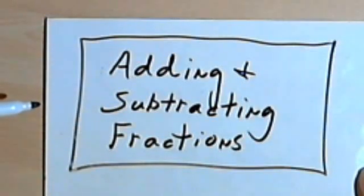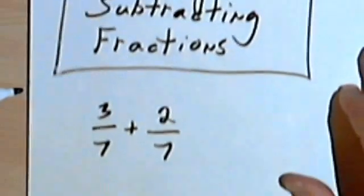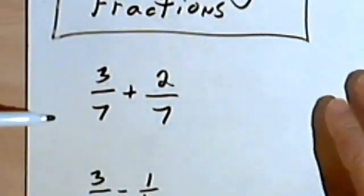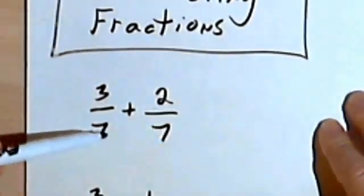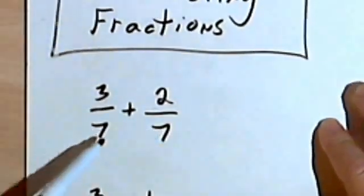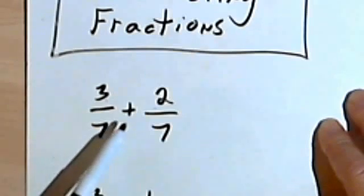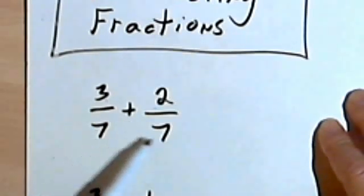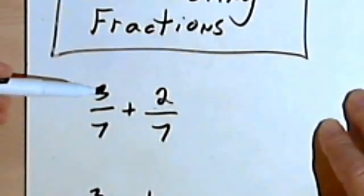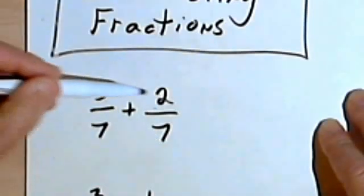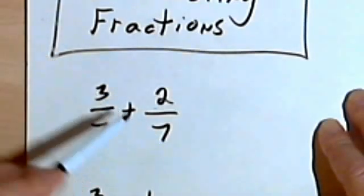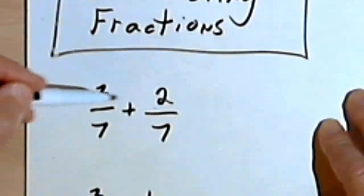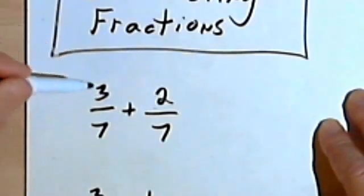This video is going to be about adding and subtracting fractions. Let's start with an instance where the denominators are the same. Basically, if you've got an addition or subtraction problem with fractions and the denominators are the same, all you have to do is add or subtract whatever the sign tells you to do — add or subtract the numerators.